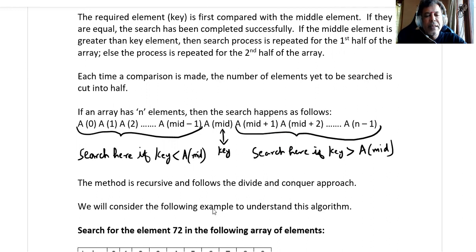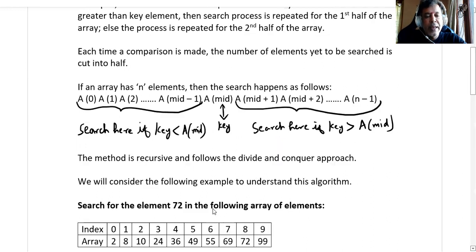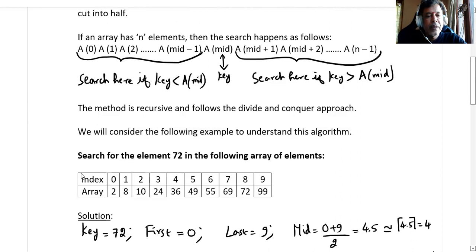Let us understand this algorithm through an example. In this array of elements, we need to search for the element 72, and here there are about 10 values, meaning n is 10, starting from index 0 to 9.